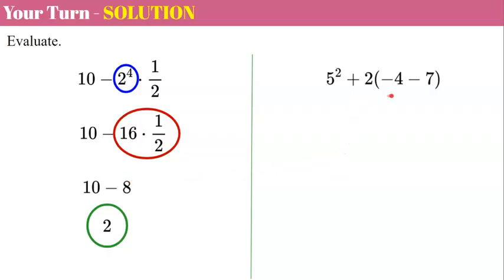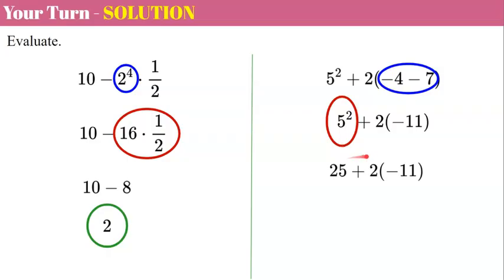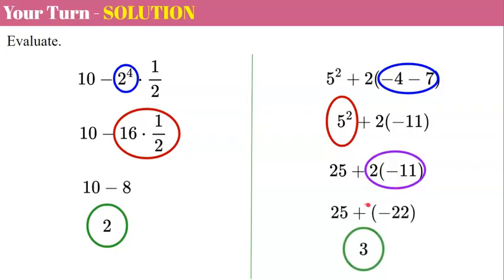For the next expression, we start with the parentheses: negative 4 subtract 7, which is negative 4 plus negative 7, giving us negative 11. Next, evaluate the exponent: 5 squared is 5 times 5 equals 25. Now multiply: 2 times negative 11 is negative 22. Finally, add: 25 plus negative 22 equals positive 3.